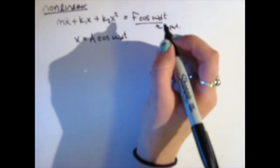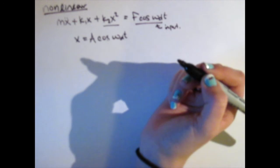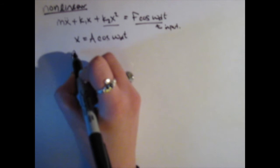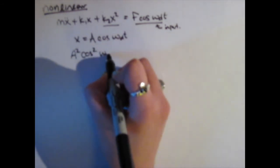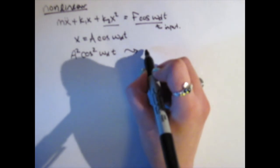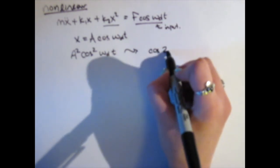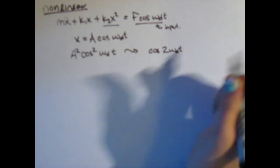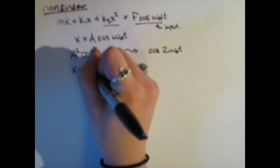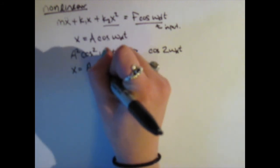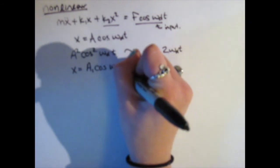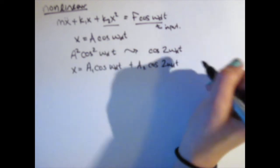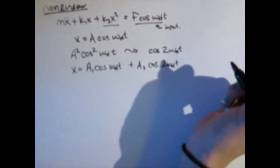Our first guess will be x equals A cosine omega drive T, which will give us a cosine squared omega drive T. Our next guess is x equals A1 cosine omega drive T, plus A2 cosine 2 omega drive T.